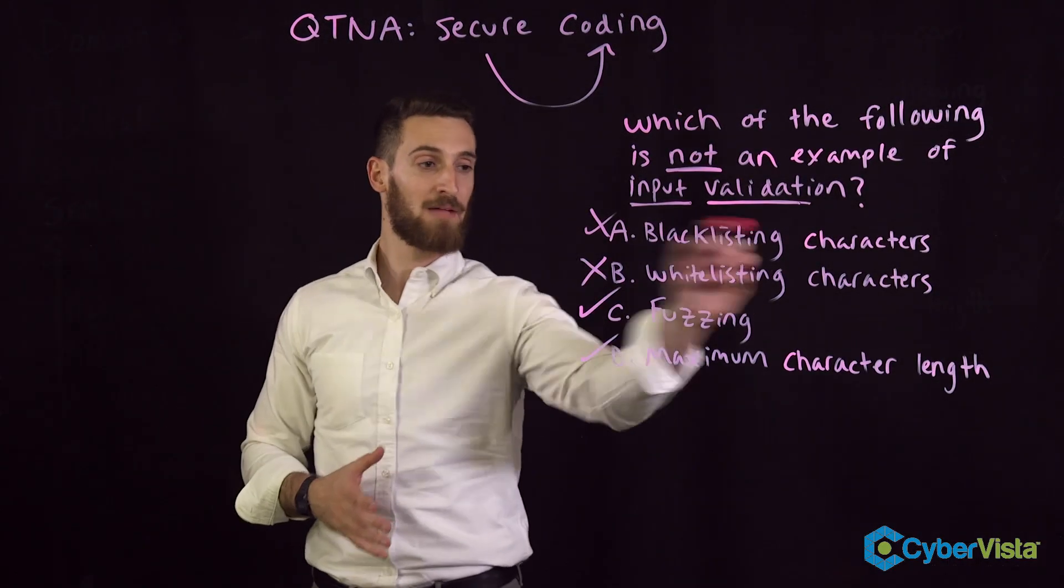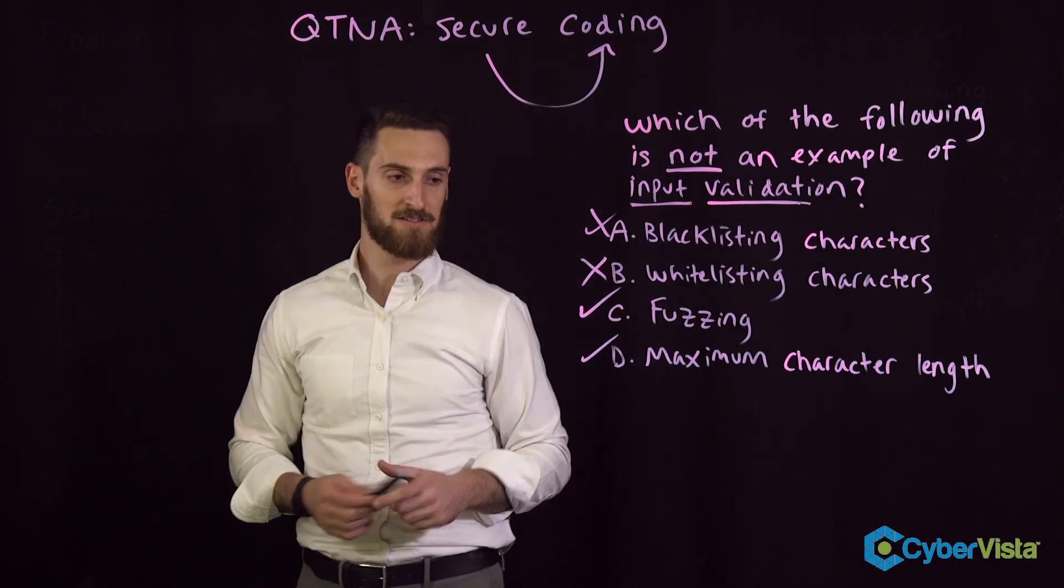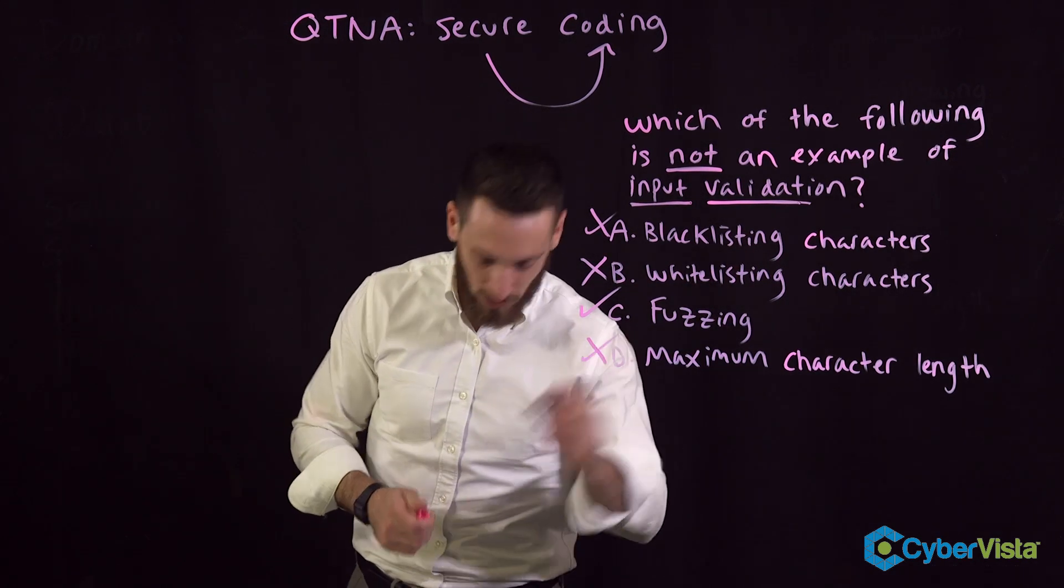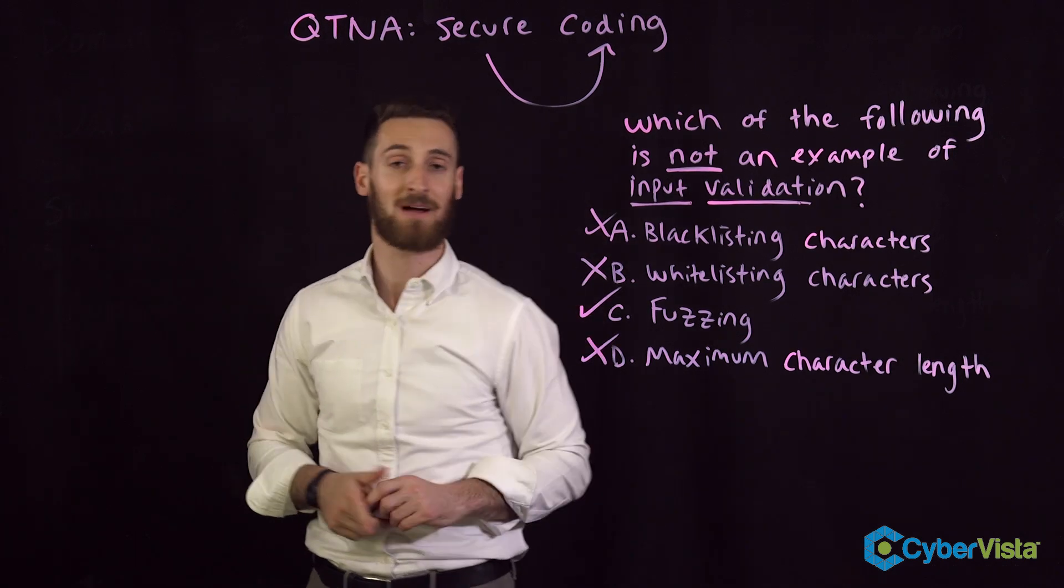Just to recap: blacklisting, whitelisting characters, and maximum character length are all examples of input validation. Fuzzing is more about testing.